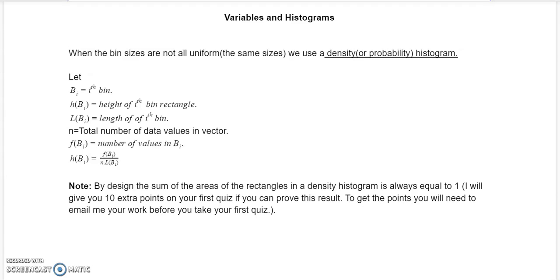This is part three of our lecture. In part two we were talking about frequency histograms, and for frequency histograms all the bin sizes were the same size. In this lecture we'll talk about when the bin sizes are not all uniform — meaning not all the same sizes. When they're not all the same sizes, we use something called a density or probability histogram.